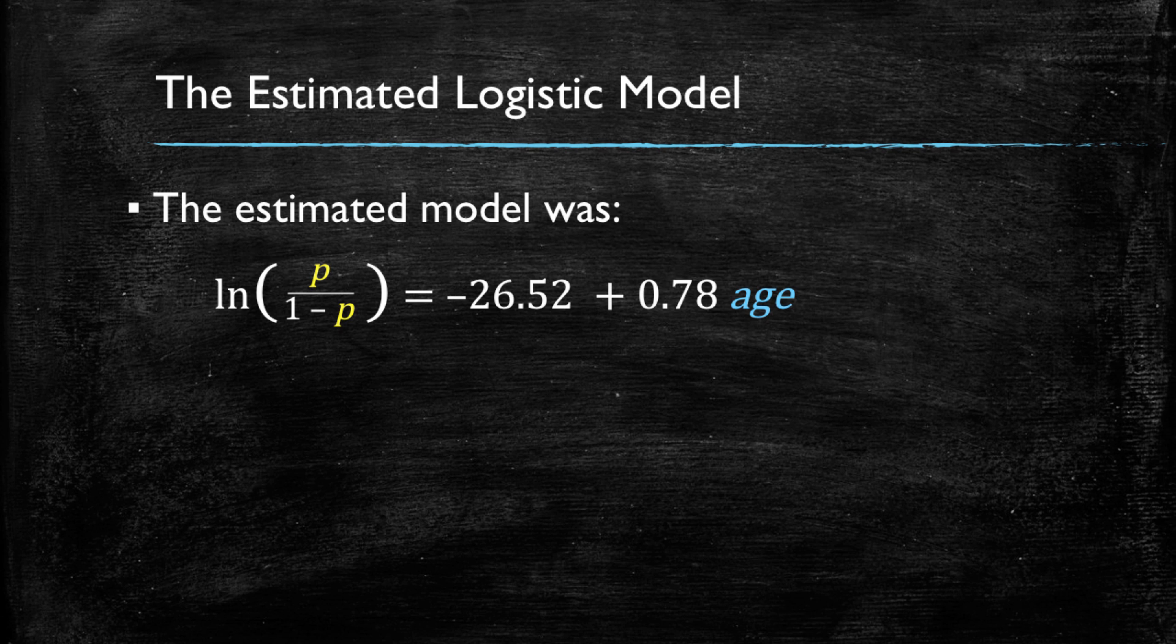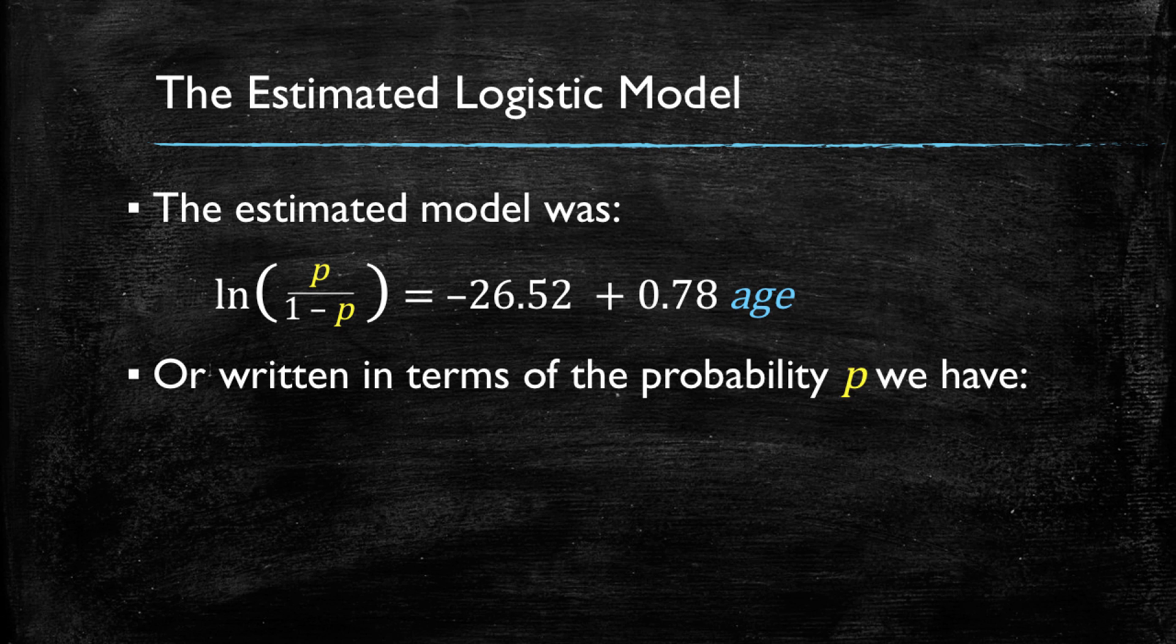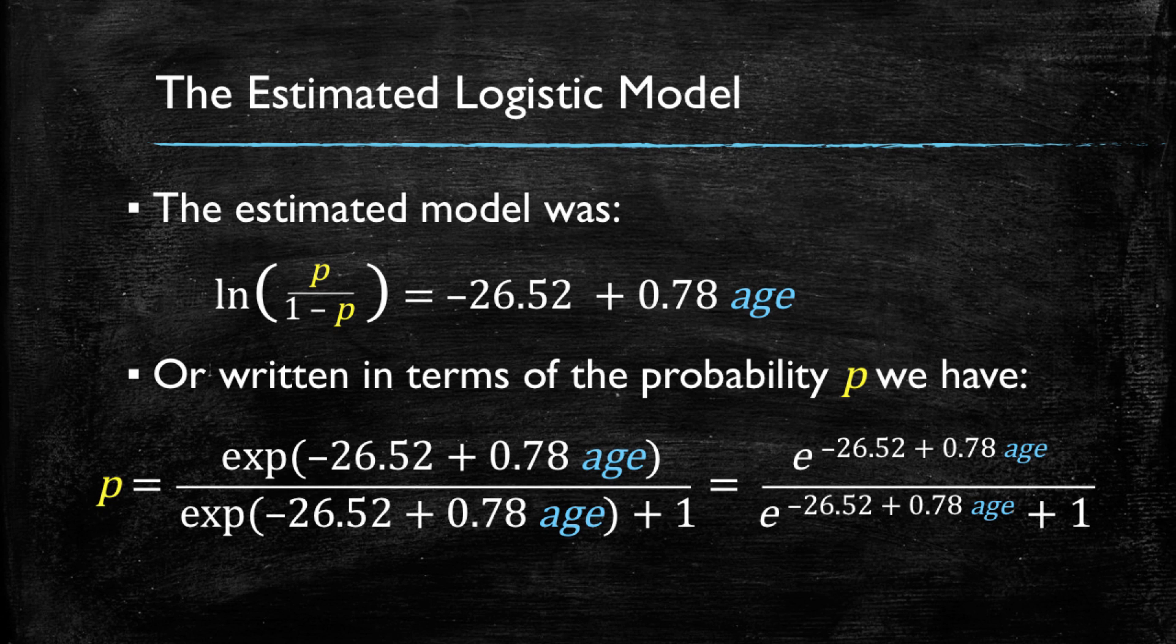Or if we do the algebra again and write this in terms of the probability, we have that p is equal to that expression. And note that all what I'm doing is rewriting the expression, but substituting the beta 0s and beta 1s for the corresponding coefficients that came out of the regression output.